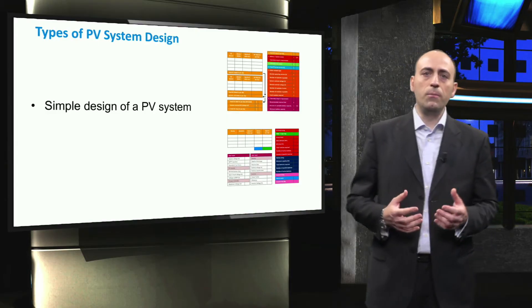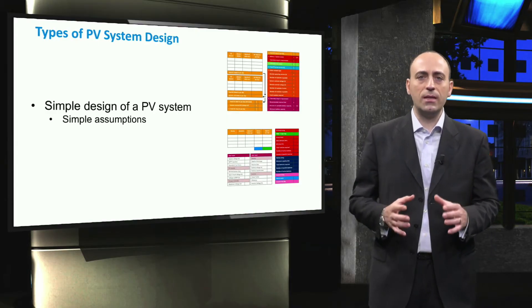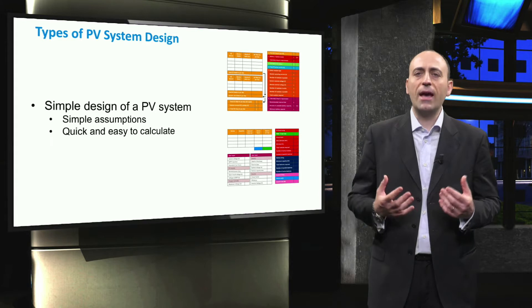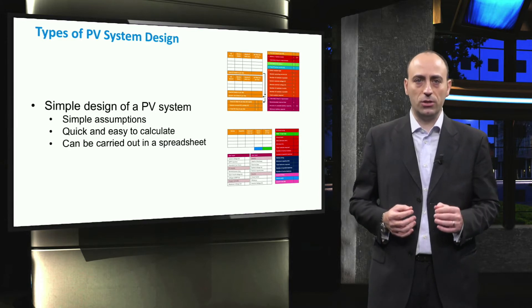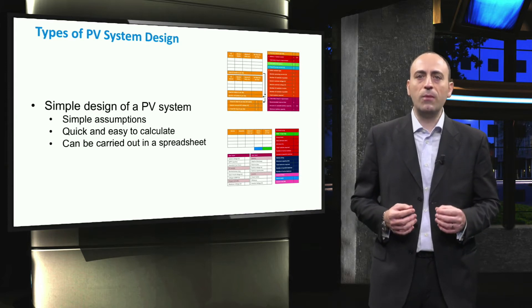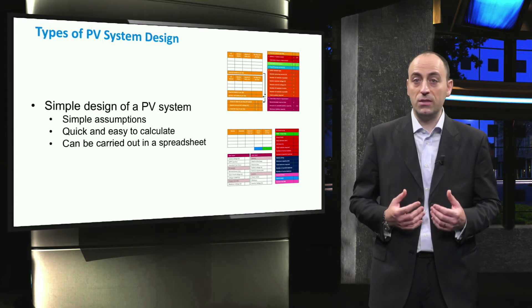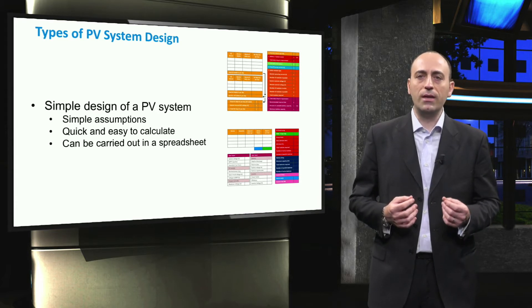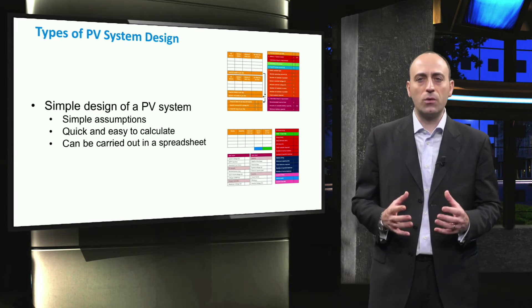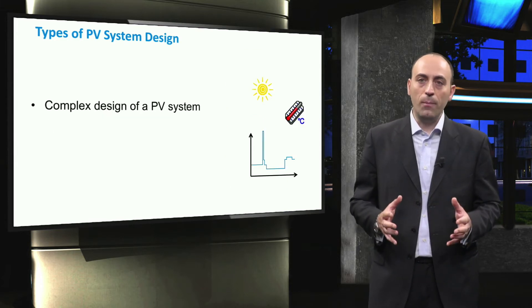Based on time and the other resources available, there are two design strategies that can be employed. The first is the simple design strategy of a PV system. The simple design strategy is based on very simple assumptions and does not take any weather-dependent changes into account. It is quick and easy to work with and can be executed using a simple spreadsheet application. In such a design approach, the performance of the PV modules and the other components are determined by considering only their standard test condition values and the equivalent sun hours at the PV system's location. This strategy is normally used to create a first approximation of a PV system design.